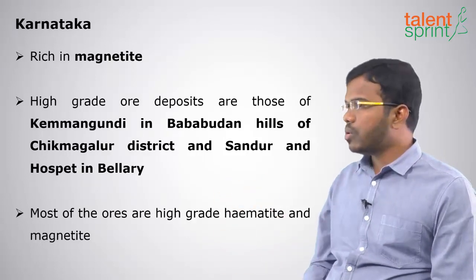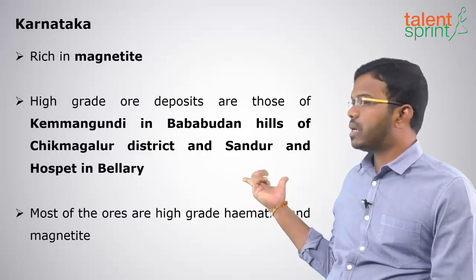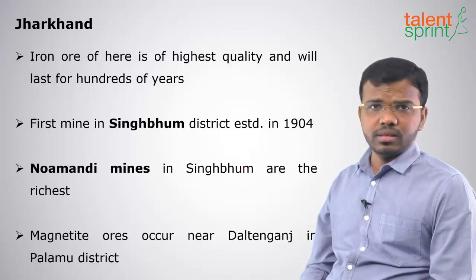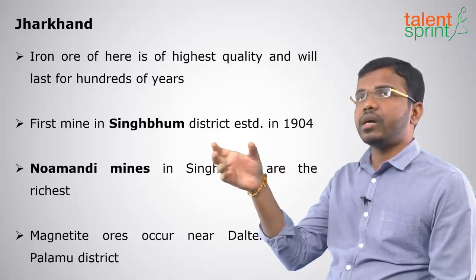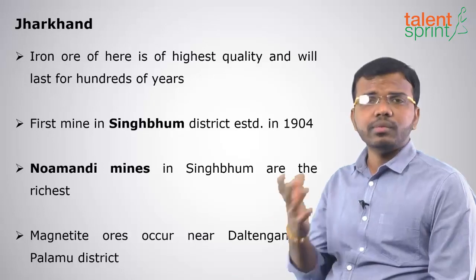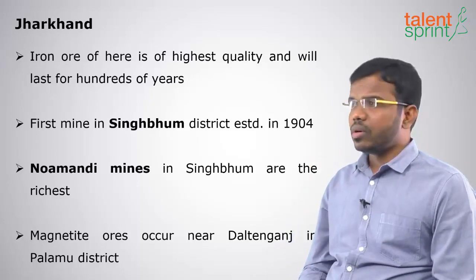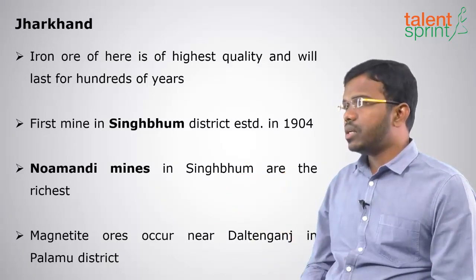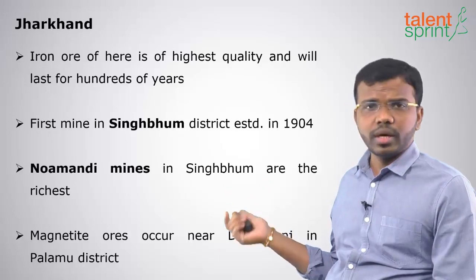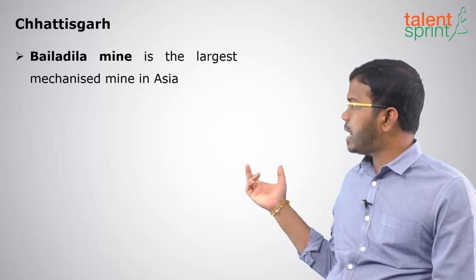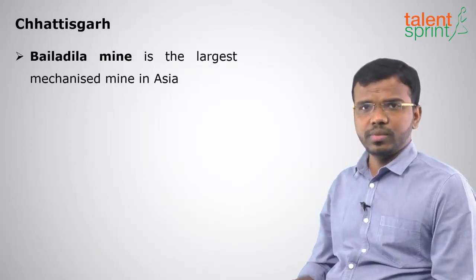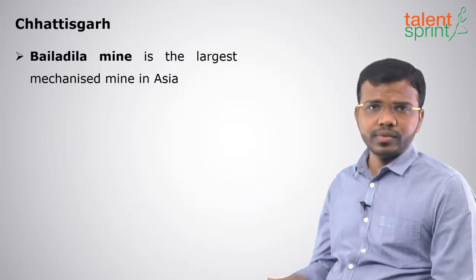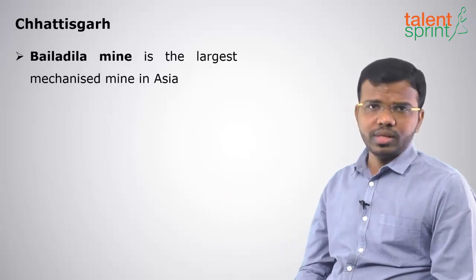In Karnataka, Sandur and Chikmagalur districts and Hospet in Bellary have most ores of magnetite and hematite. Jharkhand's Singhbhum district is very famous for iron ore — the Nova Mundi mines in Singhbhum are well known. The magnetite ore near Daltonganj in Palamu district of Jharkhand is also notable. In Chhattisgarh, the Bailadila mine is the largest mechanized mine in Asia, using very high-grade machinery.